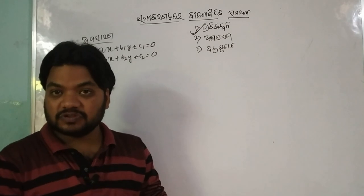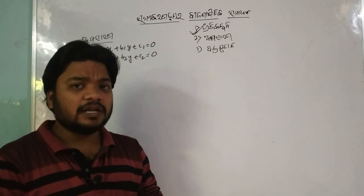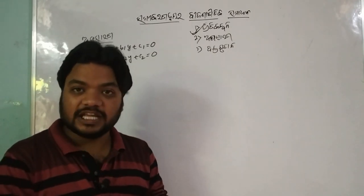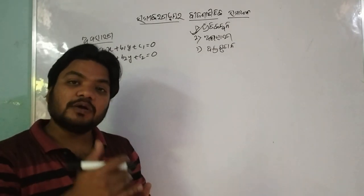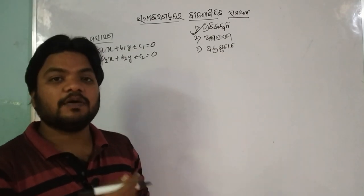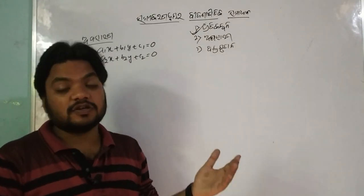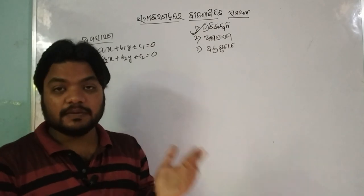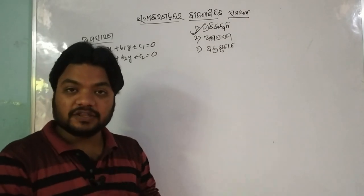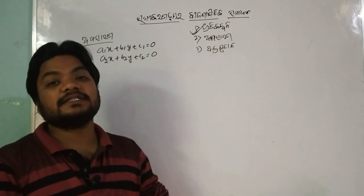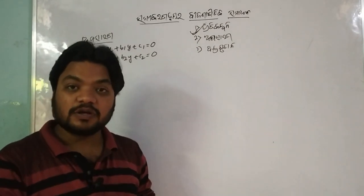What do we call elimination? We call elimination — that means eliminate. In this way, x and y are equal to zero. We call elimination: the equation for the first to get equal.